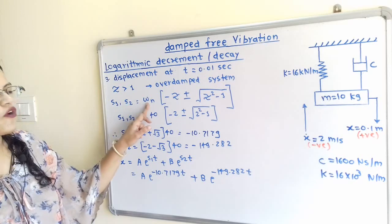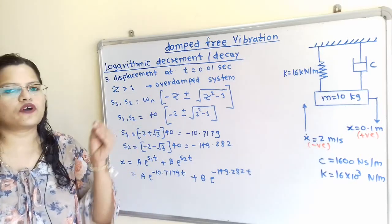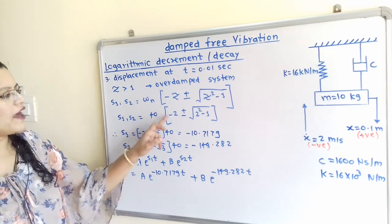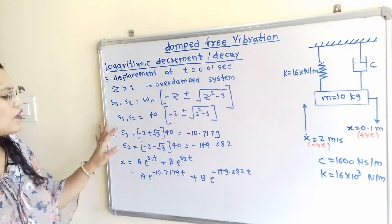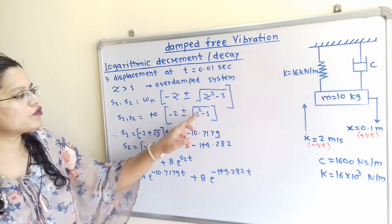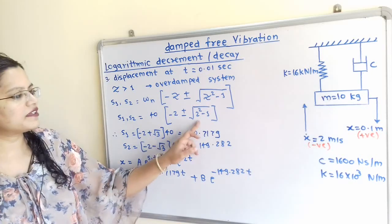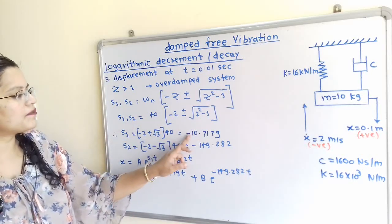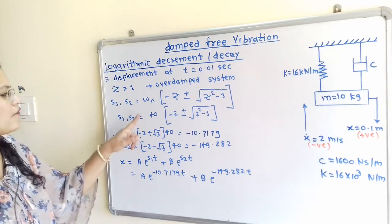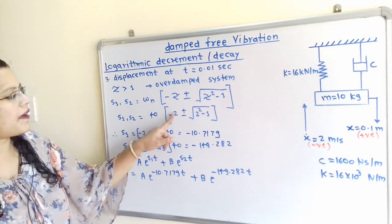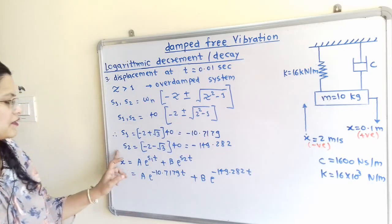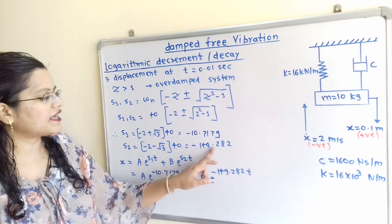We put the values of ωN and ζ to find S1 and S2. For S1 using the plus sign: S1 = 40 × (−2 + √(2²−1)) = 40 × (−2 + √3), giving S1 equal to −10.7179. For S2 using the minus sign: S2 = 40 × (−2 − √(4−1)) = 40 × (−2 − √3), giving S2 equal to −149.282.